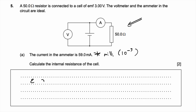We know that the EMF of a cell is equal to the current in the circuit times the total resistance in the circuit plus the internal resistance of the cell. This formula is given in the data booklet — it's the formula for the electromotive force.